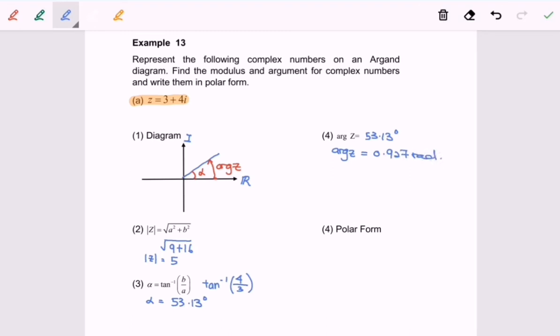And we need to express our answer in 3 significant figures. So finally, Z will be equal to 5 bracket cos argument of Z plus i sine argument of Z. So here we are and thanks for watching.